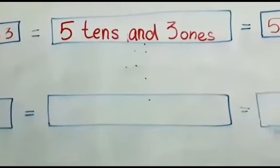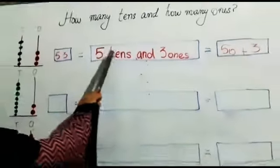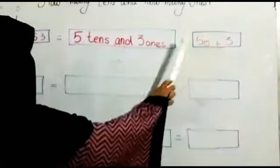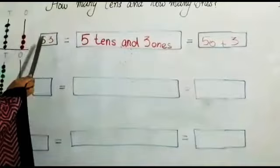Students read with me. 5 tens is 50. 3 ones equals 3. 50 plus 3 becomes 53.